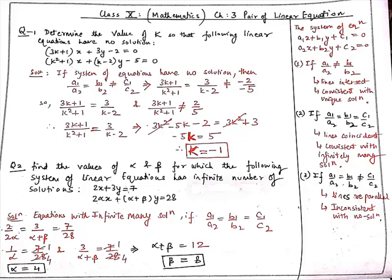Based on the equality part, we have (3k + 1)/(k² + 1) = 3/(k − 2). On cross multiplying, we get 3k² − 5k − 2 = 3k² + 3. The 3k² terms cancel out, giving −5k = 5, and therefore k = −1.